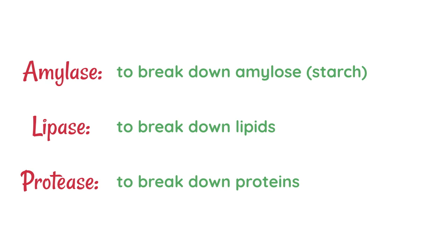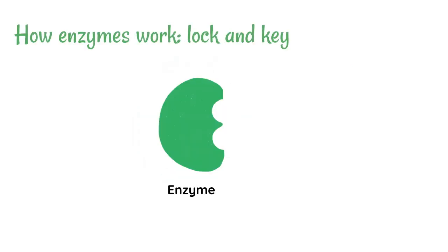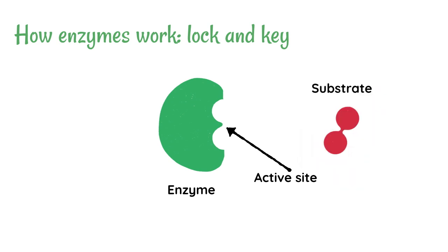Here's how they work. First of all, it's important to realize that enzymes have a really specific shape, and they've got an important part known as the active site. The active site is the place where a substrate is going to bind. A substrate is just a fancy word for the thing that is going to get broken down by an enzyme.